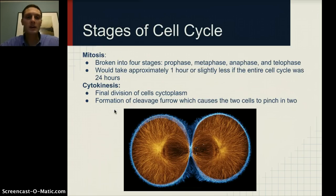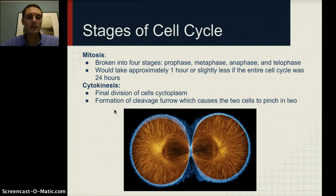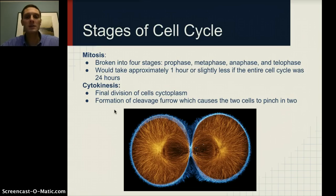The stages of the cell cycle can be broken into two main parts: the first is mitosis, and the second is cytokinesis. Mitosis is broken down further into a couple of different stages — prophase, metaphase, anaphase, and telophase.